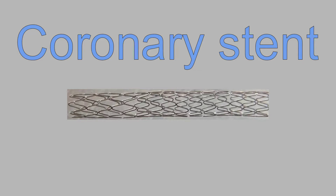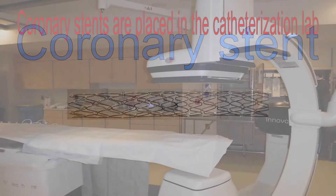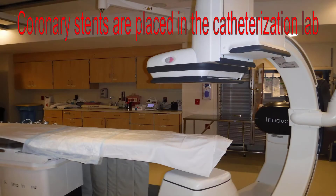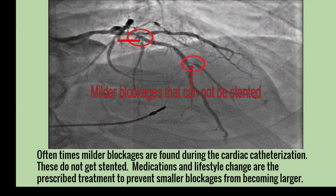One way to treat a blockage is to use a coronary stent. The enlarged picture shows that a stent is a coil. It supports the artery, keeping it open. Coronary stents are placed in the catheterization lab. Oftentimes, milder blockages are found during the cardiac catheterization and do not get stented.